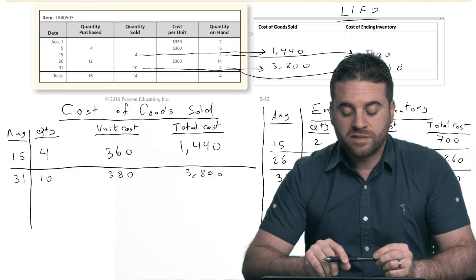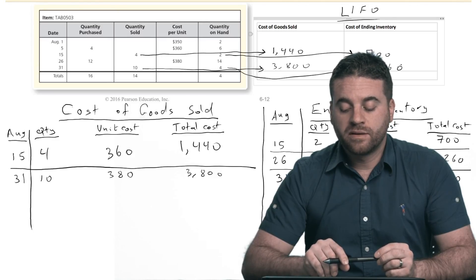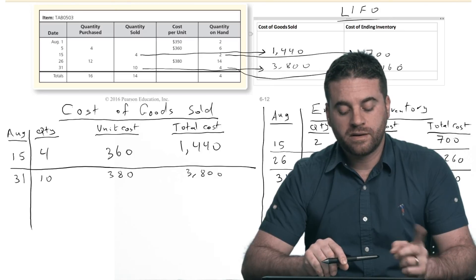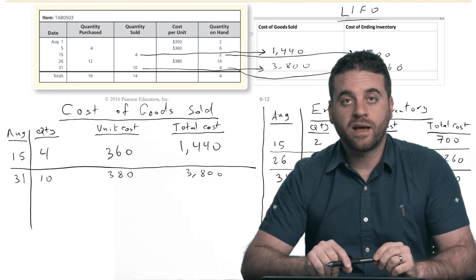Okay. So that was the LIFO method using the perpetual inventory system. And in the next video, we'll talk about the weighted average method.